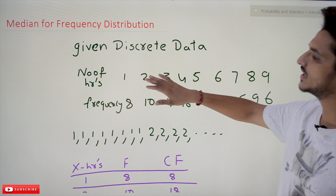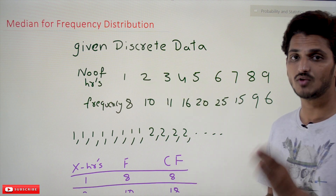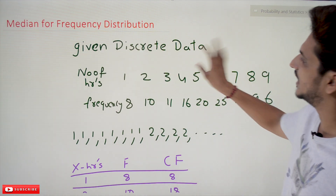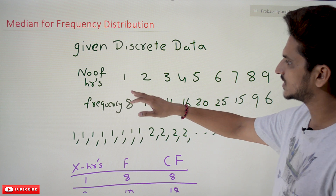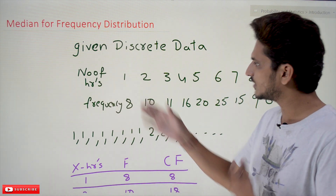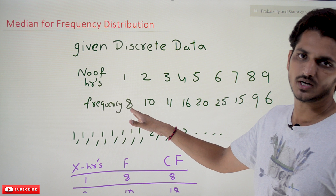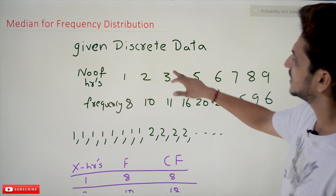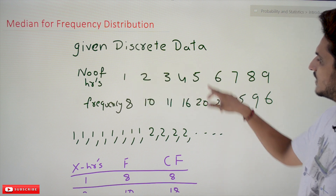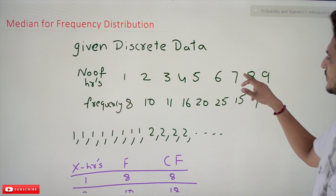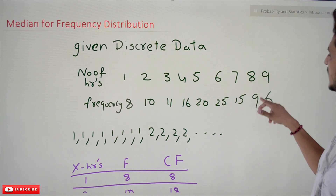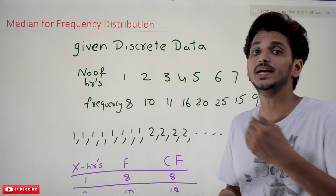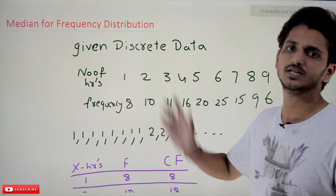Coming to today's class — we take an example and understand how we calculate the median value for a given frequency distribution. We are having two types: discrete values and continuous values. The first example is discrete data: number of hours students study every day. 8 members study 1 hour, 10 study 2 hours, 11 study 3 hours, 16 study 4 hours, 20 study 5 hours, 25 study 6 hours, 15 study 7 hours, 9 study 8 hours, and 6 study 9 hours.